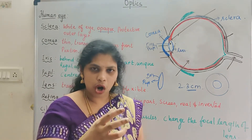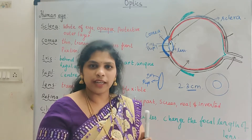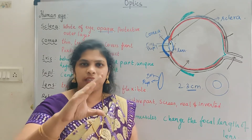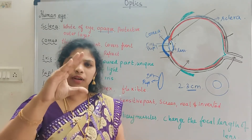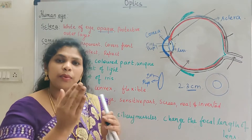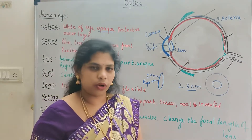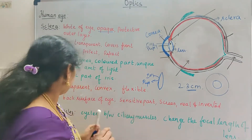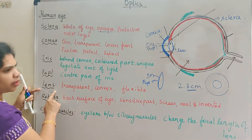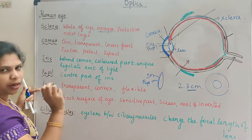The lens is strong and hard and flexible — like a jelly, if you press it, it is flexible. So the lens focuses and forms the image on the retina.